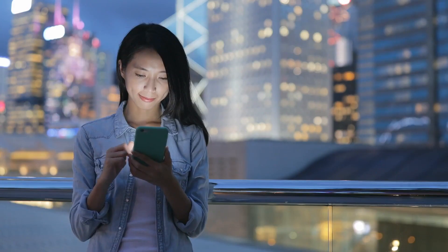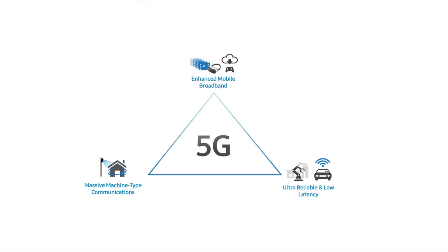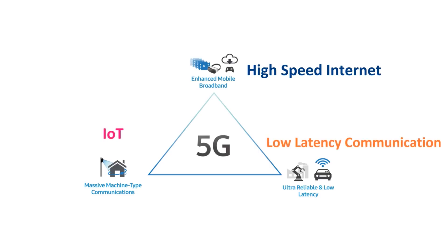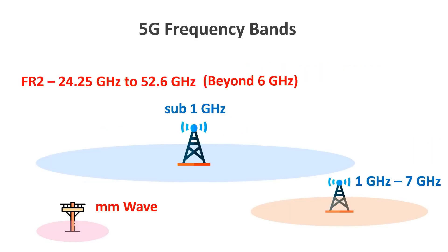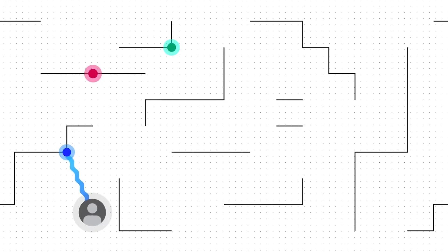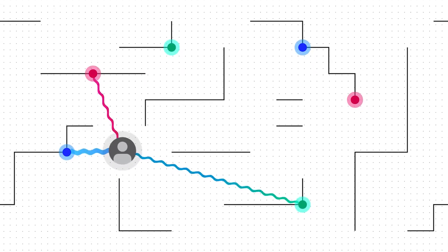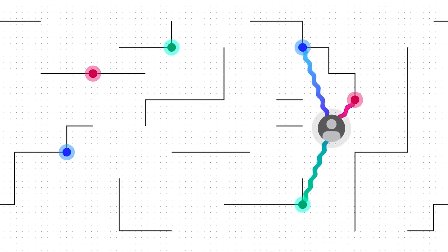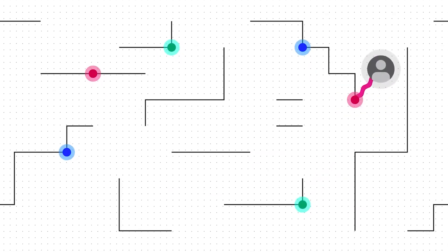Frequency is inversely proportional to penetrating power, so any obstacle will partially block the wave and result in low bandwidth. 5G transmits data in millimeter waves using frequencies of 24 GHz to 100 GHz. Your phone's hardware must support the 5G network — many users have reported overheating while using 5G. Keep in mind that although you get gigabit download speeds with 5G, the upload speed remains the same as 4G.